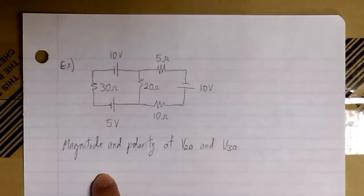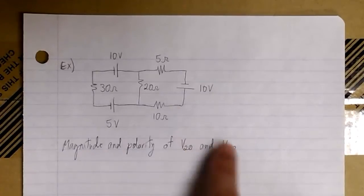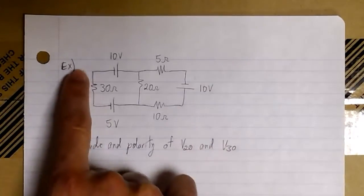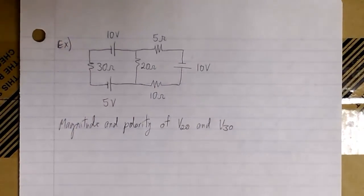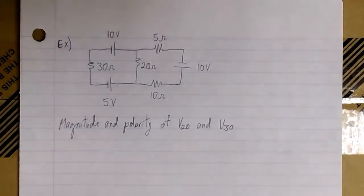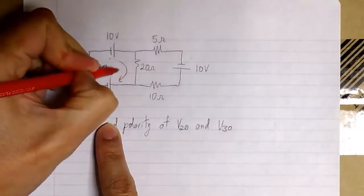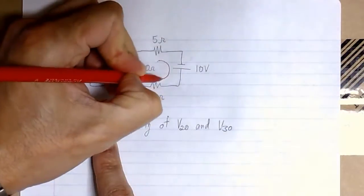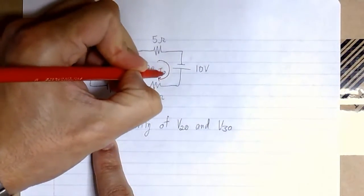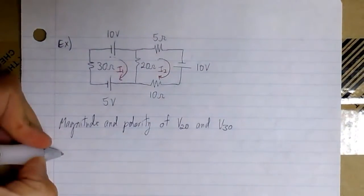The first step is to define the loop currents. We have the 20 ohm and 30 ohm resistors there. In this case we have two loops, so we have to define the loop currents and we can define them in any direction. I'm going to choose both currents to have the same direction, in this case clockwise. So we have I1 for loop 1 and I2 for loop 2.